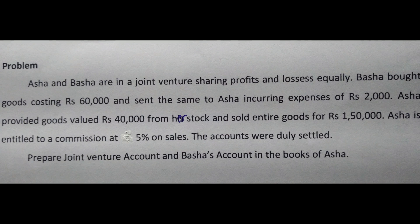Let us read the problem. Asha and Basha are in a joint venture sharing profits and losses equally. Basha bought goods costing rupees 60,000 and sent the same to Asha incurring expenses of rupees 2,000. Asha provided goods valued rupees 40,000 from her stock and sold the entire goods for rupees 1,50,000. Asha is entitled to a commission at five percent on sales. The accounts were duly settled. Prepare joint venture account and Basha's account in the books of Asha.